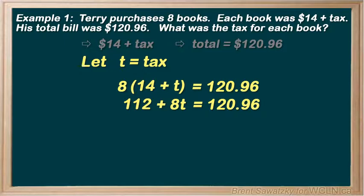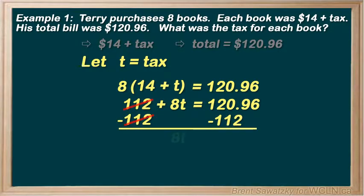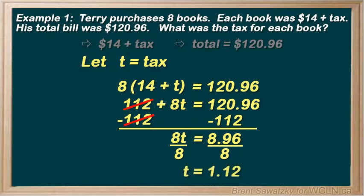So, carrying on, 112 plus 8t equals 120.96. And we'll subtract the 112 from both sides, keeping it balanced. 8t equals 8.96. Divide both sides by 8, and t equals 1.12. The tax for each book is $1.12.